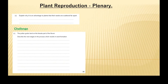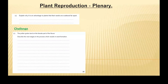Last question — C. Explain why it is an advantage to plants that their seeds are scattered far apart. And then if you finish that early, we have the challenge: the pollen grain lands on the female part of the flower — describe the next stages in the process which results in seed formation.